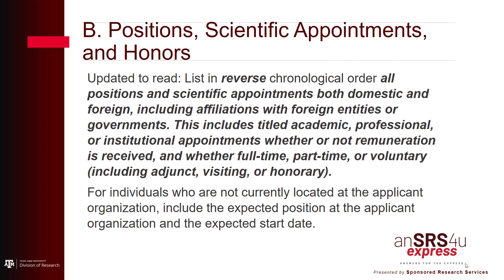Section B, Positions, Scientific Appointments, and Honors. List in reverse chronological order all positions and scientific appointments, both domestic and foreign, including affiliations with foreign entities or governments. This includes title, academic, professional, or institutional appointments, whether or not remuneration is received, and whether full-time, part-time, or voluntary. This includes adjunct, visiting, or honorary positions.